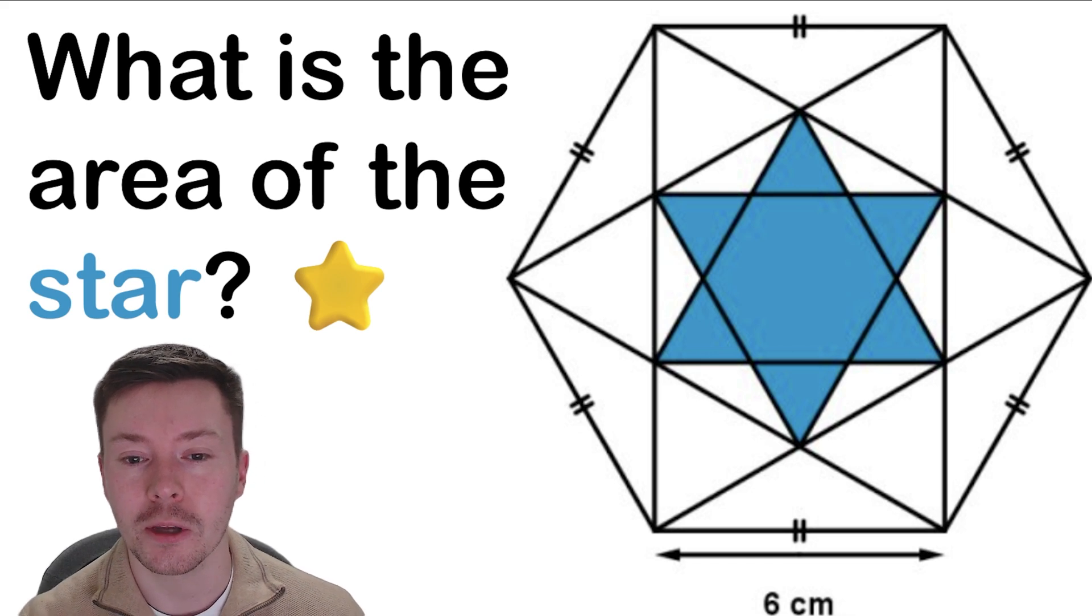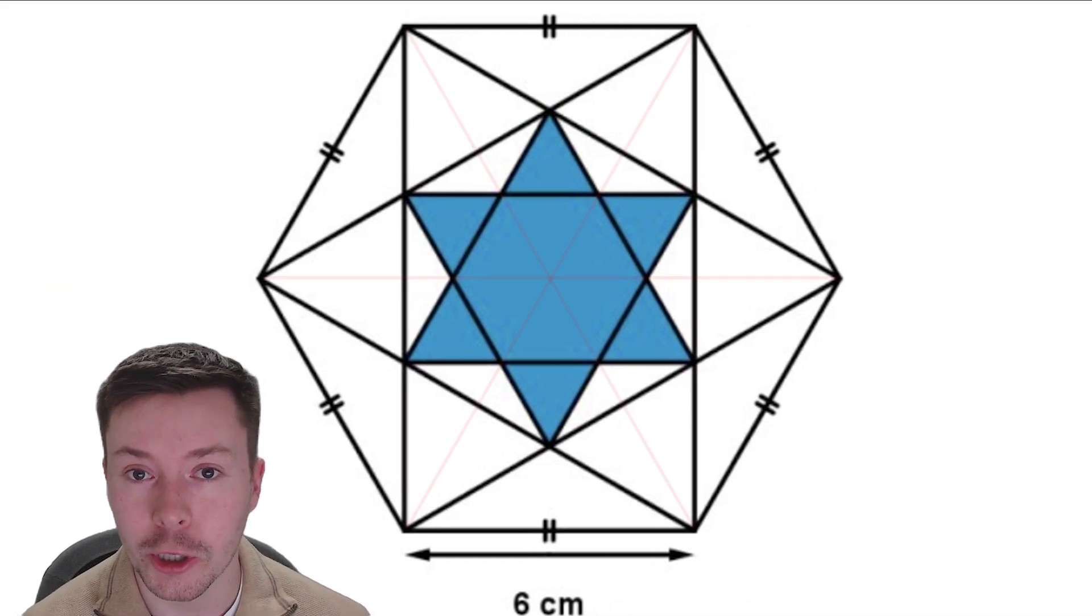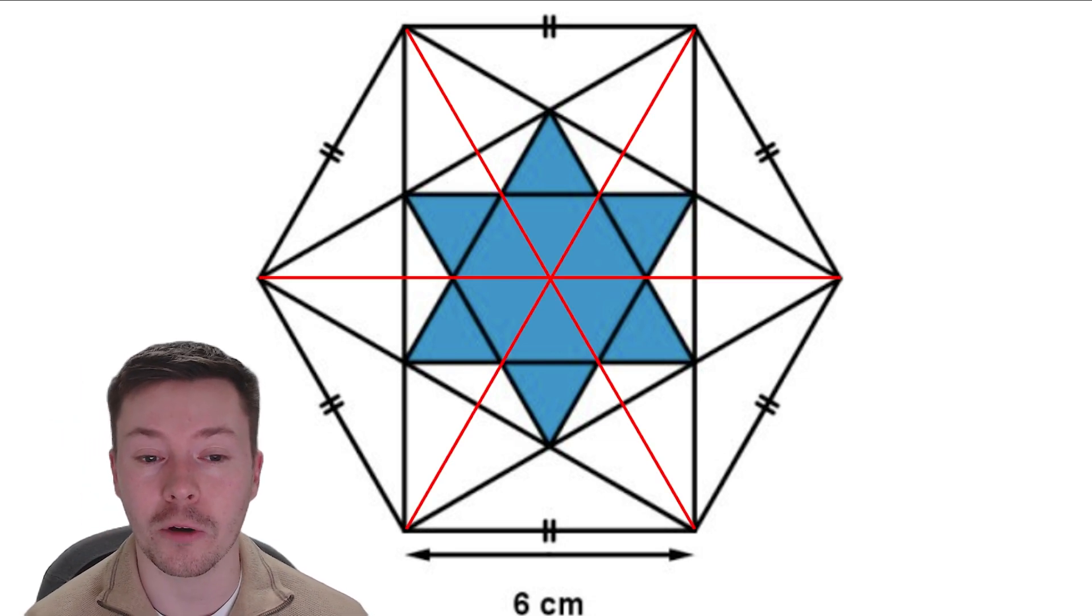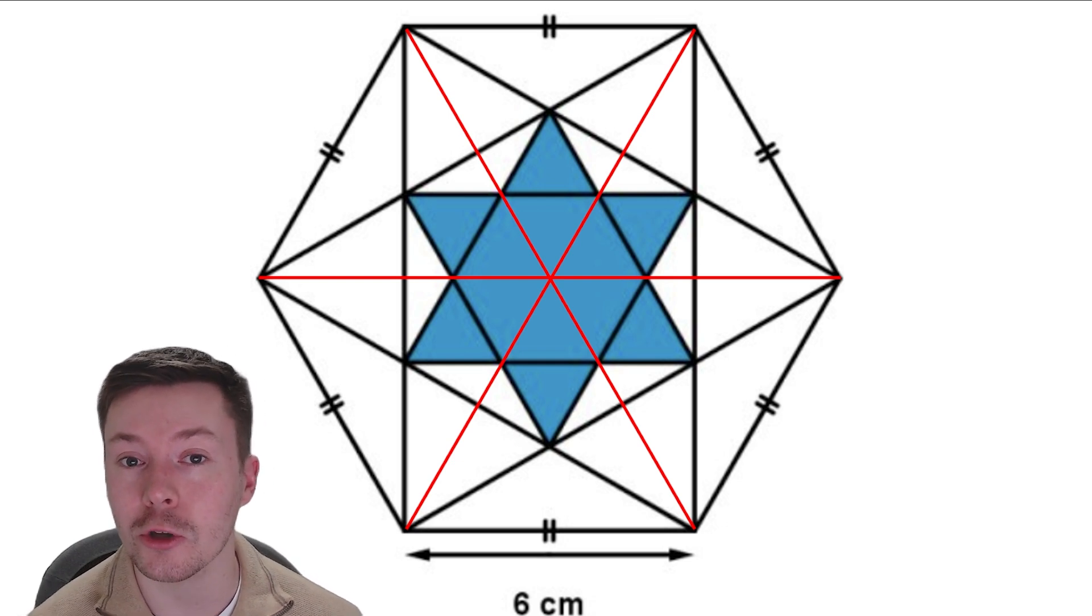Now the first thing that I wanted to do is look at the symmetry. There's a lot of symmetry in a hexagon, and we've got a hexagon inside this hexagon and then we've got a star inside that. So there's lots of symmetry that we can use here.